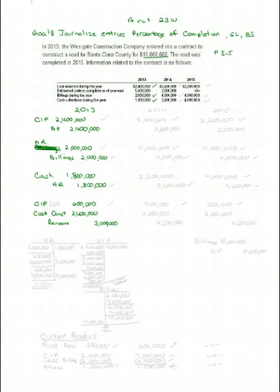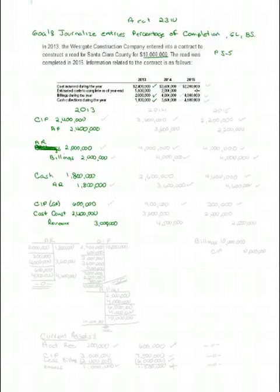We've calculated the gross profit entry on our first Pencast for 2013. That entry was to tuck into construction in progress gross profit in the amount of $600,000, to pick up costs of construction in the amount of $2,400,000 — our costs for the year — and pick up revenue in the amount of $3,000,000. So there's our journal entry: revenue $3,000,000, cost of construction $2,400,000, and gross profit tucked into the construction in progress account in the amount of $600,000. Let's post these accounts and see where we are.